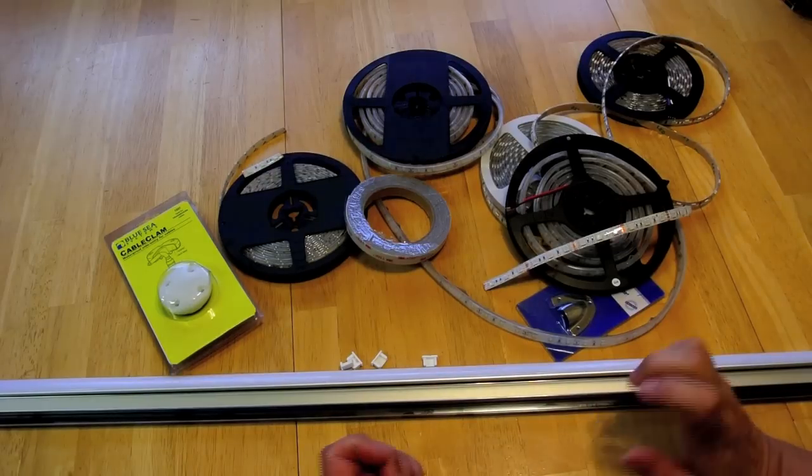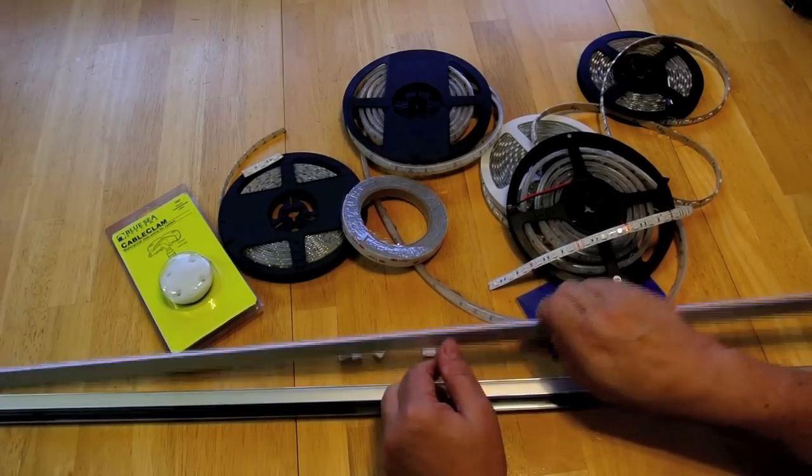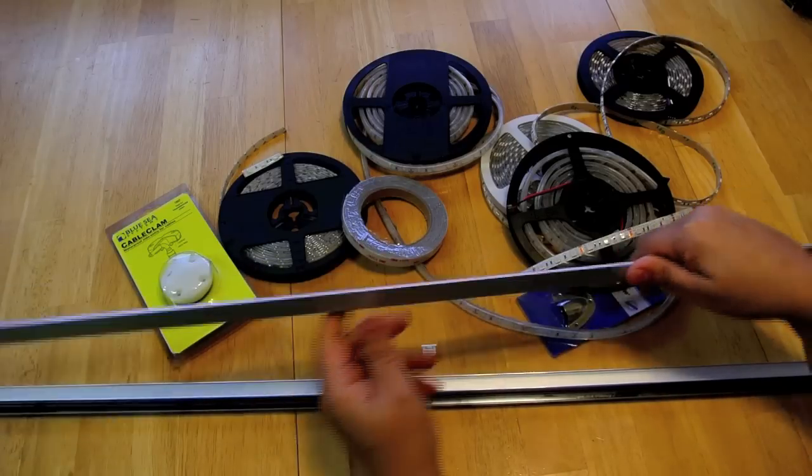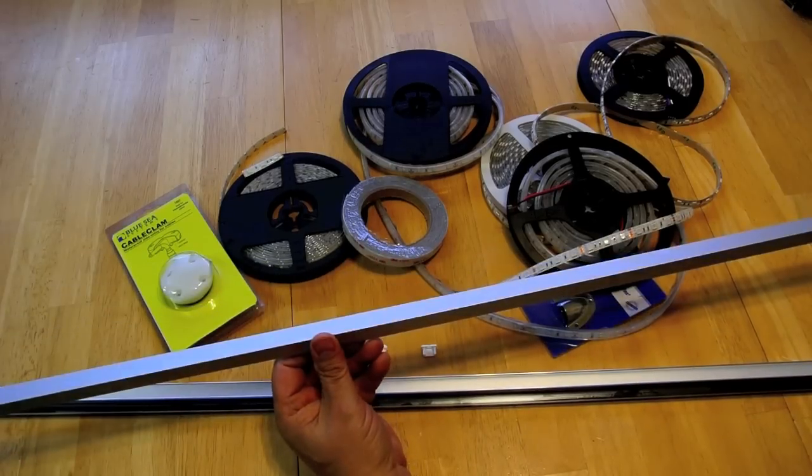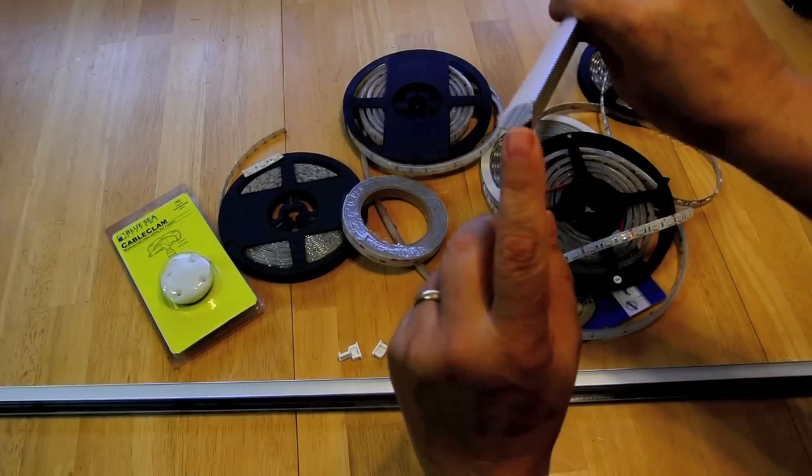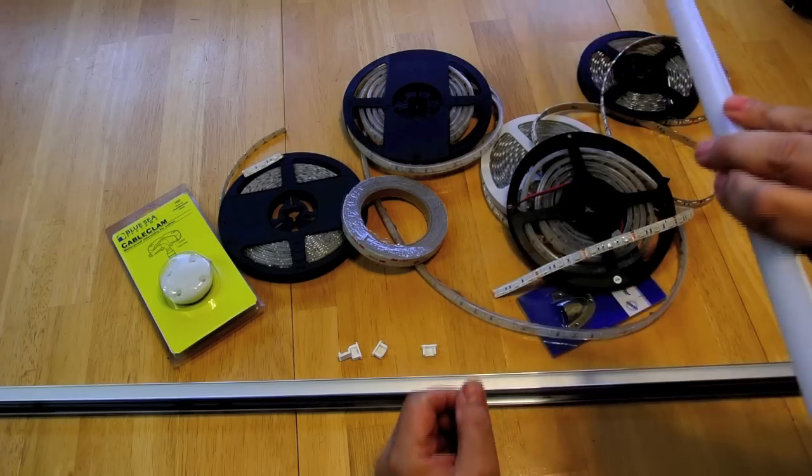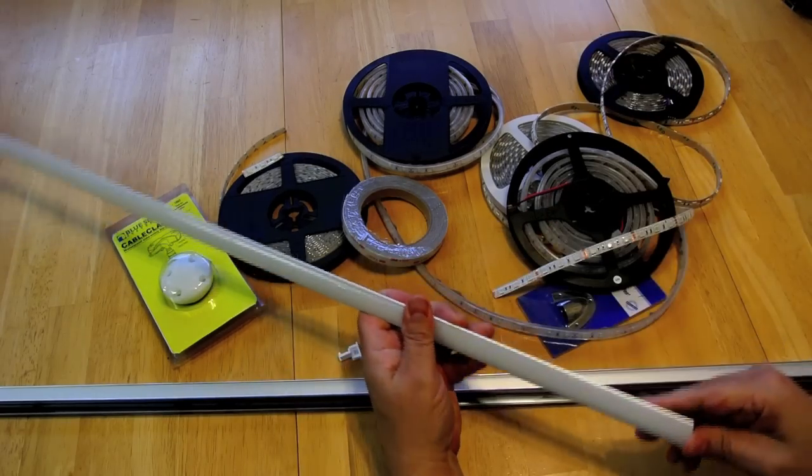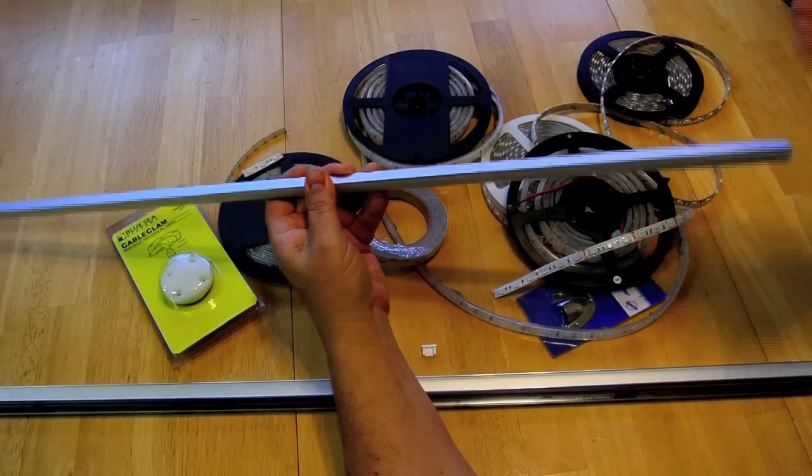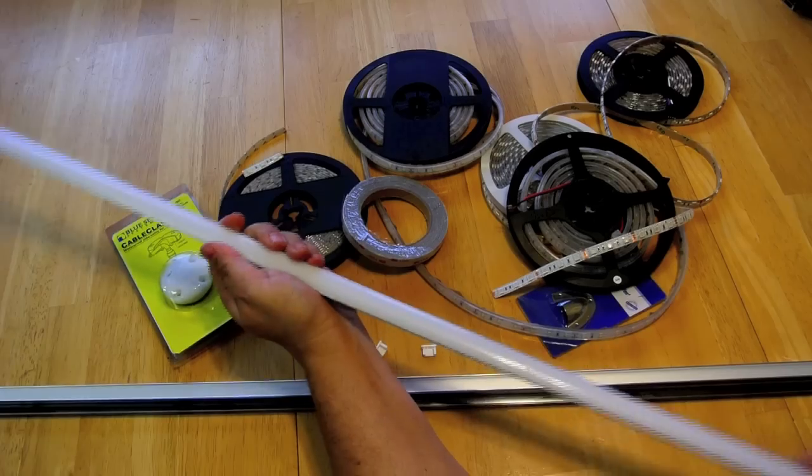Now another mounting option that I like are these strips. This one here is an aluminum strip and they come in about one meter length. So you can buy as many as you need. And this one is a forty-five degree angle. So essentially you would mount this so that the LEDs would be pointing at a forty-five degree angle down.